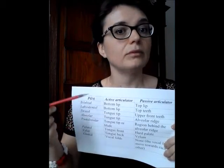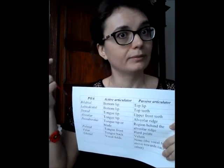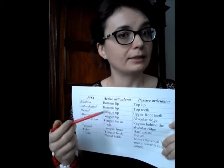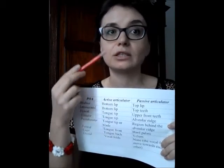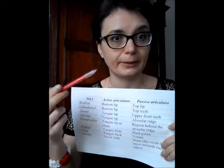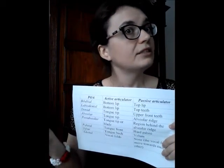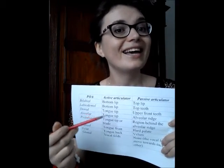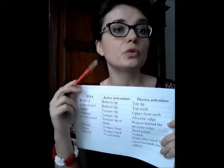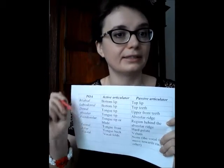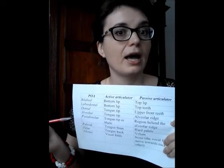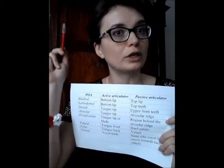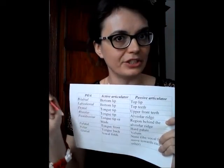Labiodental — 'labio' means lip, 'dental' means teeth — and the bottom lip moves towards the top teeth. Dental means that the teeth are involved, and the tongue tip moves towards the upper front teeth. Alveolar: the tongue tip moves towards the alveolar ridge.